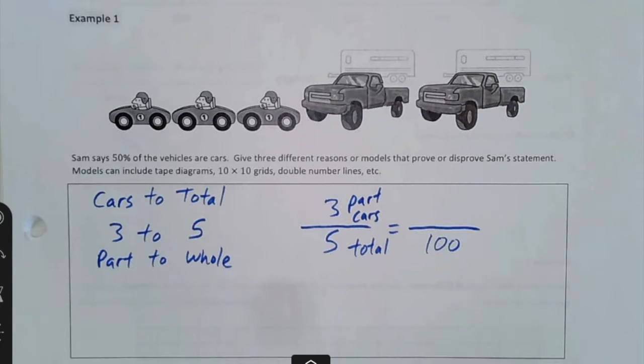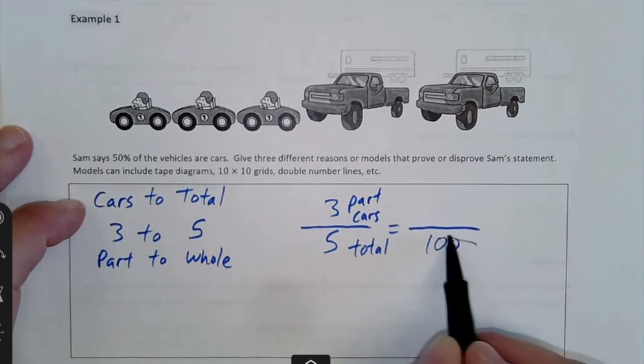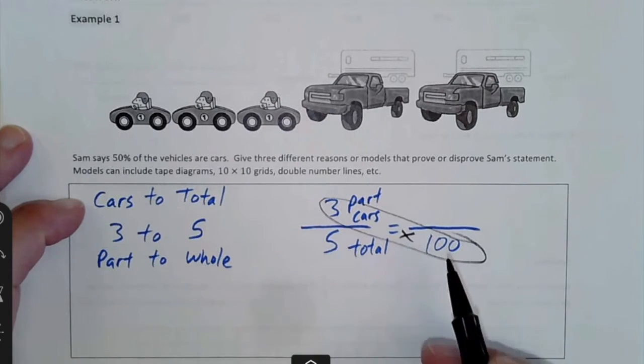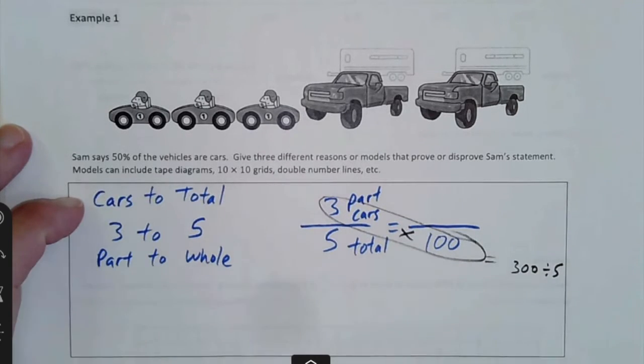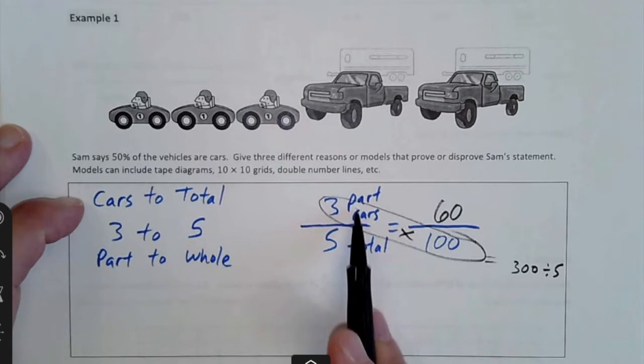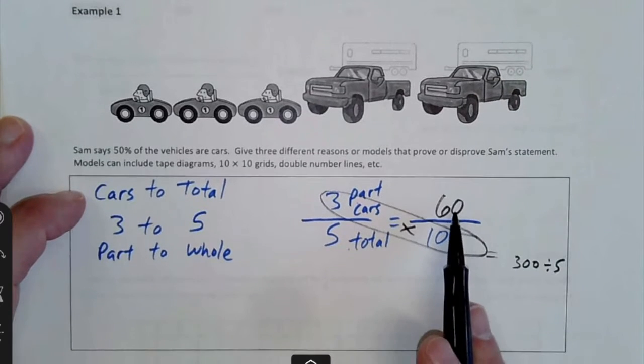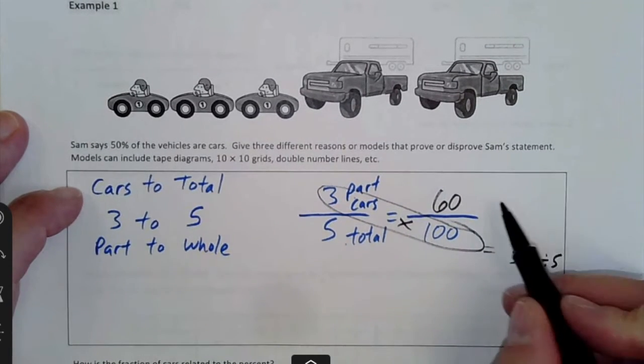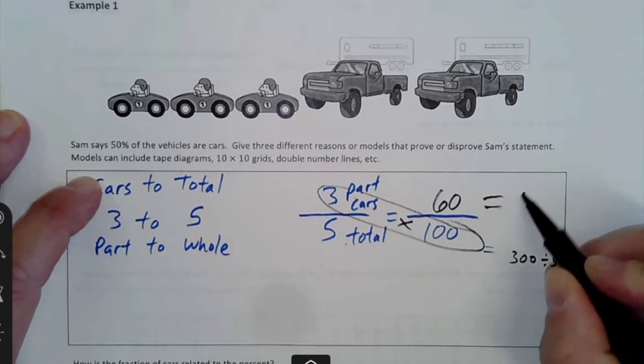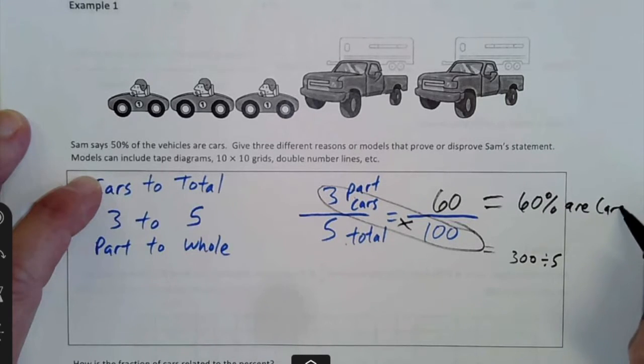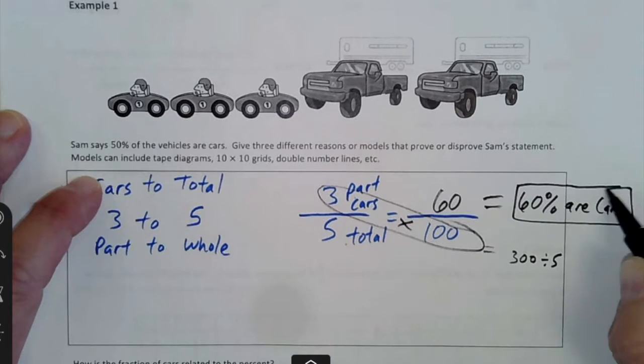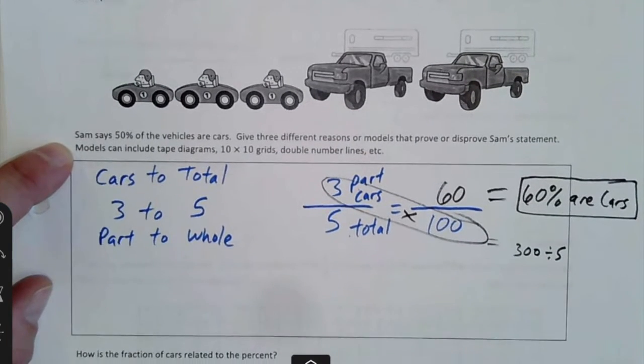We could solve this cross product. Multiply the two across we have, three times 100, 300, divide by five, and I get 60 out of 100. So that would show, since three is the part that's cars out of five, then that would be 60 that's cars out of 100. So that would equal 60% are cars. So that disproves, what was it, Sam? He thought 50% had to be cars.